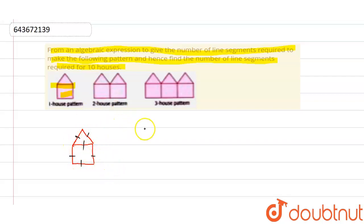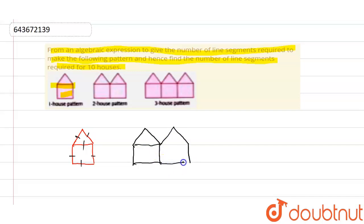Now when we make the two-house pattern, we count the line segments: 1, 2, 3, 4, 5, 6 — similar to the first house — but one side is shared/common. So in the second hut we get only 1, 2, 3, 4, 5 additional line segments.